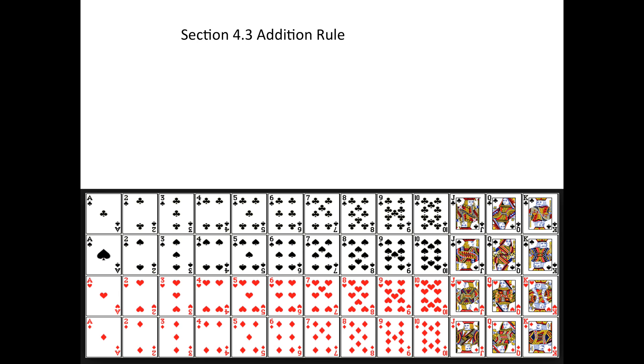Here we have the addition rule for probability. The first example is going to use playing cards, so I've got the pictures of the playing cards up and ready to go. Draw a card out of these 52.